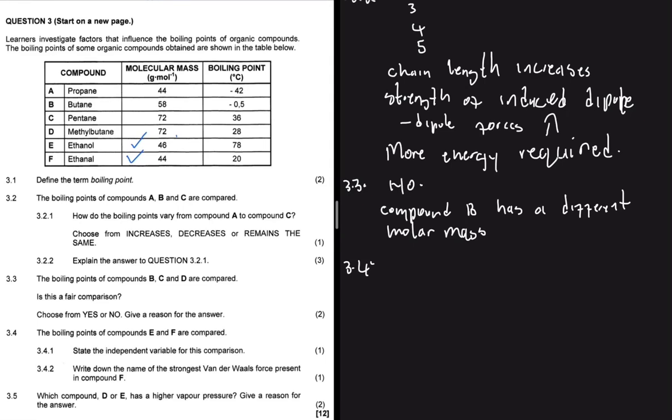And now, the control is what's kept the same, which is the molecular mass. We have 46 and 44. They're not really kept the same, but then they're pretty much close to each other. And then, what we're changing here is the functional group. You can see that here we have ethanol and here we have ethanal, alcohol and then aldehyde. So the independent variable, we can say, is the functional group. You can even say it's the homologous series, and it will still be fine.